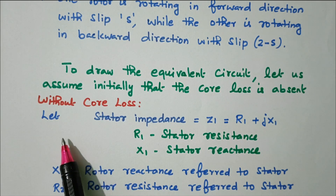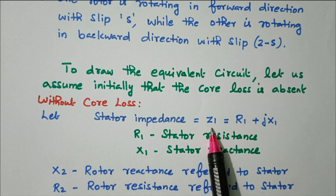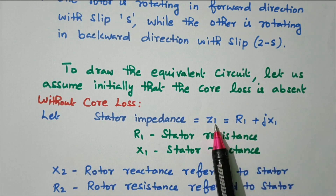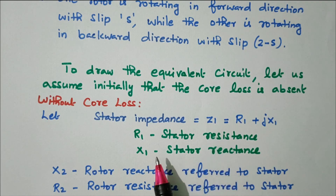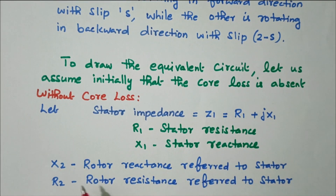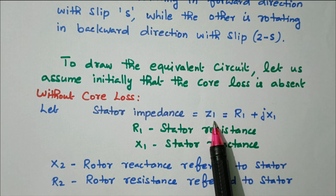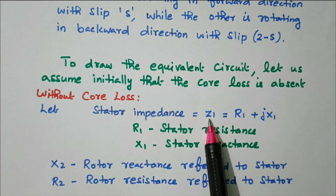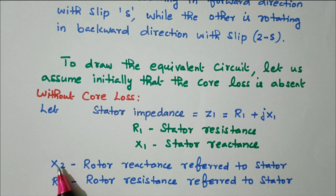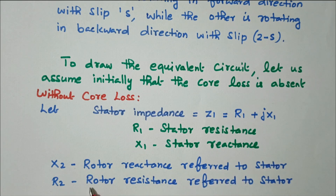Now we'll see the parameters. Stator impedance z1 equals r1 plus jx1. Here, subscript 1 refers to stator and 2 refers to rotor. So r1 is the stator resistance and x1 is the stator reactance. x2 is the rotor reactance referred to the stator, and r2 is the rotor resistance referred to the stator.